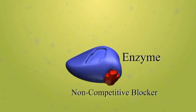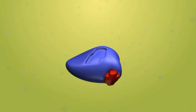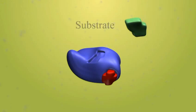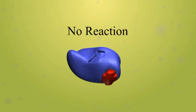Non-competitive enzyme inhibition involves the binding of a blocker to the enzyme away from the active site. This binding causes a conformational change in the enzyme, altering the shape of the active site, which prevents the substrate from binding. No reaction will occur as long as the non-competitive blocker is bound to the enzyme.